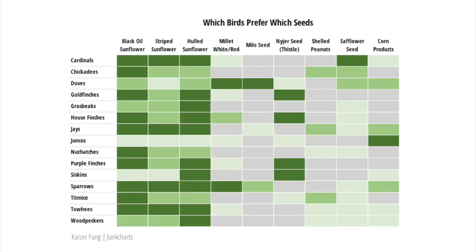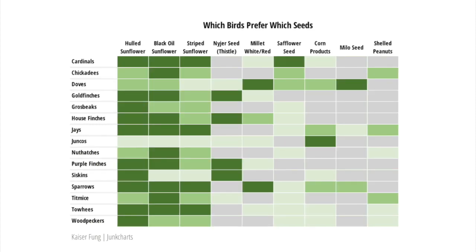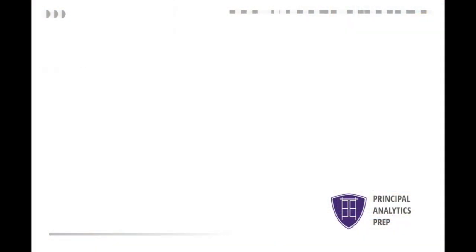I also resorted the columns so the most popular seeds are shown on the left and the least popular ones are on the right. There you have it — a step-by-step tutorial to making a good chart. If you like this video, share it with your friends, subscribe to our channel, and comment below to suggest future topics.